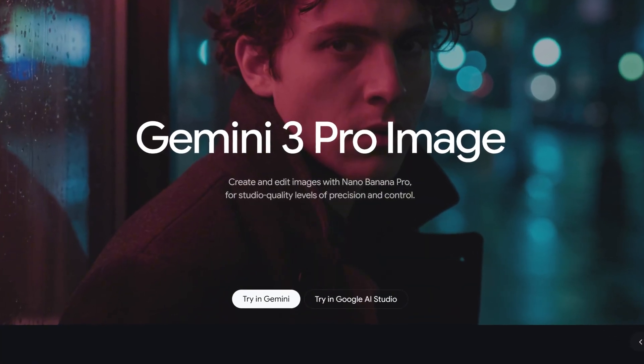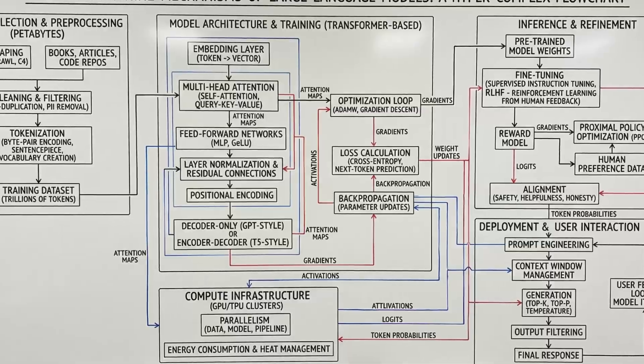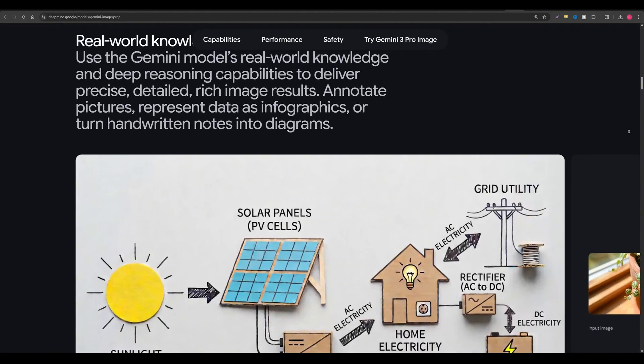Google struck again today with the release of Nano Banana Pro, where they took the best AI image model on the planet and made it even better. Characters are now more consistent, images are more crisp, and we are continuing to win the battle against text generation in AI creations. The best part is the increased control this new tool gives us when generating AI images. In this video, I'm going to go over all the Nano Banana Pro upgrades, where you can use it, how much it costs, and we're going to do head-to-head comparisons versus the old model.